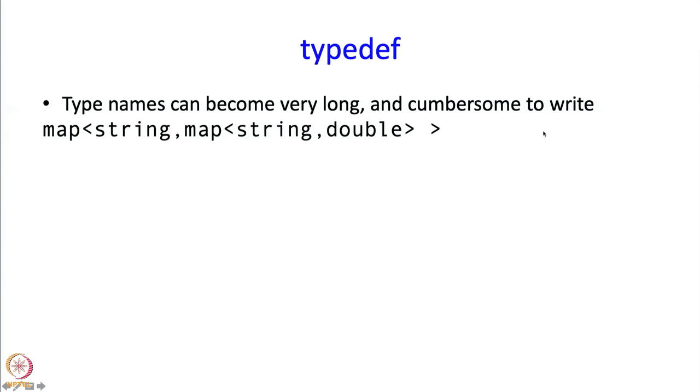But now suppose I want to pass that variable to a function, then even there we will have to type this as the type of that argument. So you may think that typing this again and again is very cumbersome. And also it does not really tell me what this is all about.